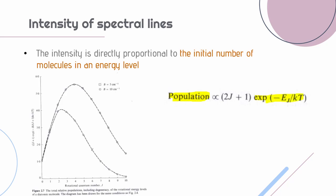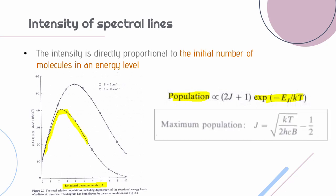What we observe is that as the rotational number increases, the population also increases to a maximum and then decreases. We have a maximum population that happens at J value equals the square root of KT divided by 2HCB minus half.